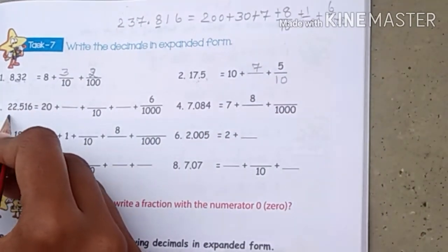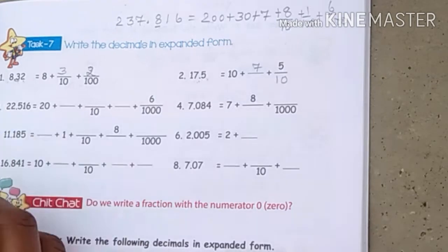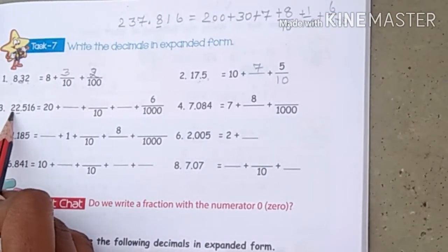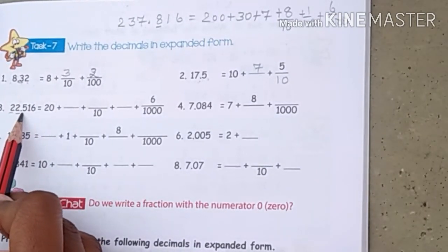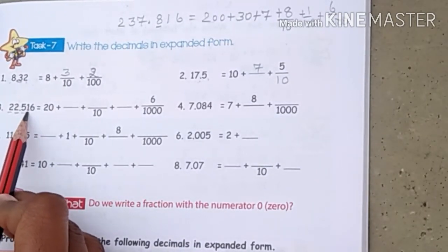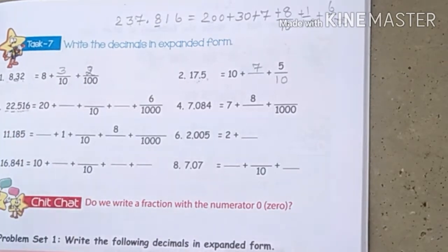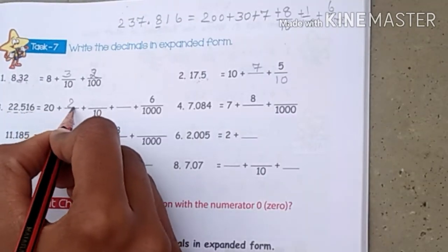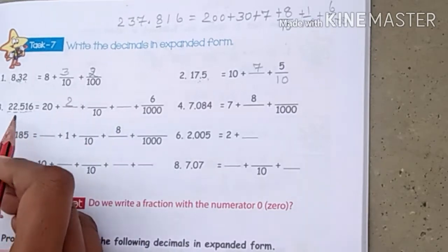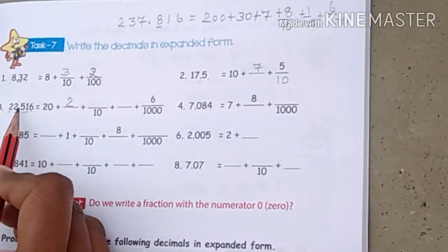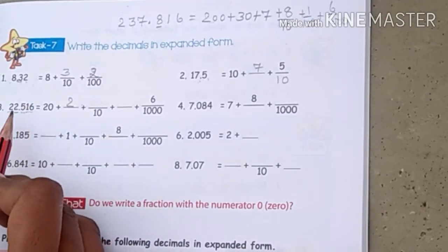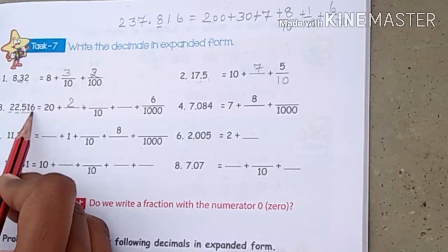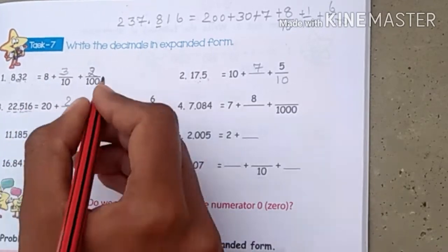Question number 3: 22.516. For the whole number 22, ones is this digit, tens is this — so you write 20 plus 2. Now the decimal part is 516. The first decimal digit 5 is tenths, so 5 upon 10. The second digit 1 is hundredths, so 1 upon 100. The third digit 6 is thousandths, so 6 upon 1000.